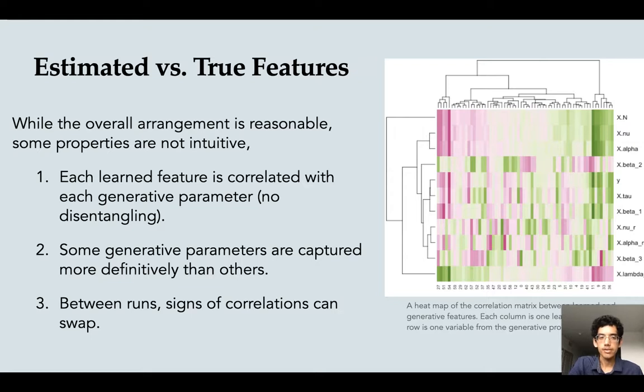Some things about the features that are worth noting. First of all, in usual high dimensional statistics, what we're used to is each feature is relatively different from all the others. In fact, most of the features might not be relevant at all. But in the learned features here, they are all associated with some of the generative parameters. And the other thing is they're all pretty correlated with one another. So here I'm showing you a heat map of the correlation matrix between the learned and the true parameters. Xn is the number of cells in each image, Xnu is the true roughness of the underlying process. And each column is a different one of the learned features from one of my autoencoder runs. And you can see the correlation between the number of cells and each of these learned features is pretty high for a lot of them. So it's not like we have isolated, disentangled information across the features.